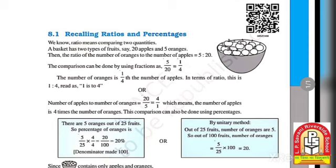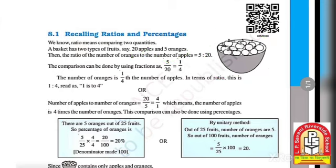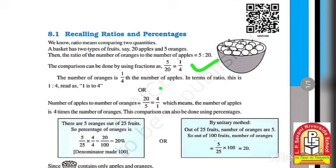First of all, let's learn about ratios. A ratio means comparing two quantities. Say a basket has two types of fruit: 20 apples and 5 oranges. A picture suggests one basket is full of apples. The ratio of the number of oranges to the number of apples is 5 to 20. This comparison can be done using the fraction 5 upon 20, which gives us 1 upon 4.